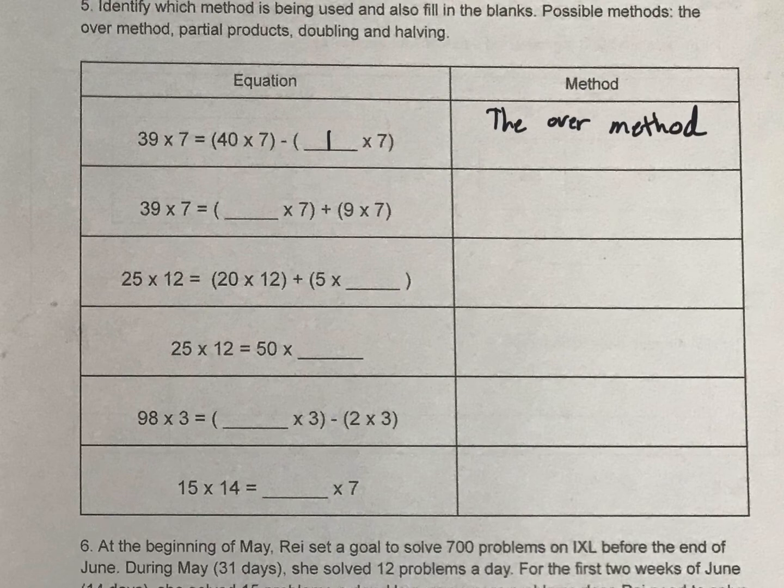And then we have the same exact one here, 39 times 7. But this time they're splitting it into something times 7 and 9 times 7. So if you split that up that would be 30. And that is what we call partial products.